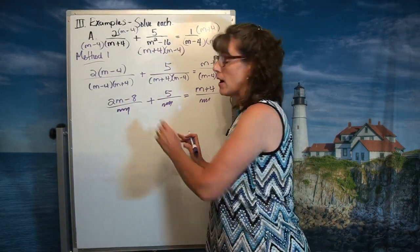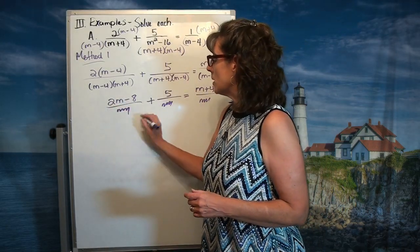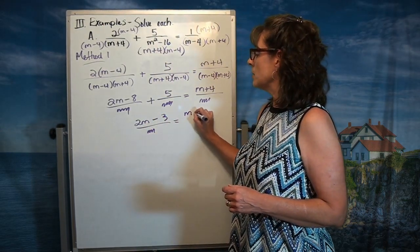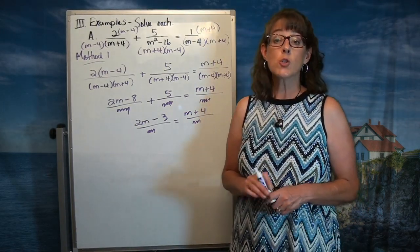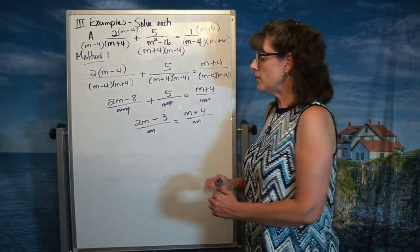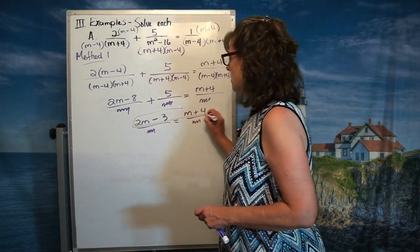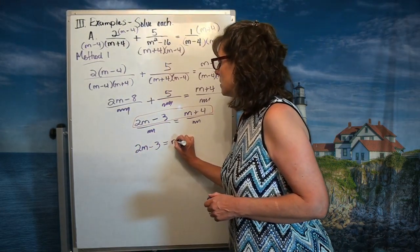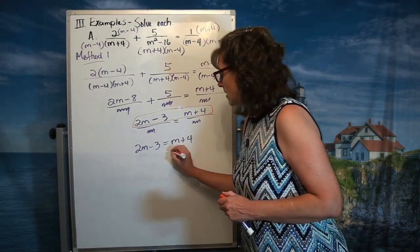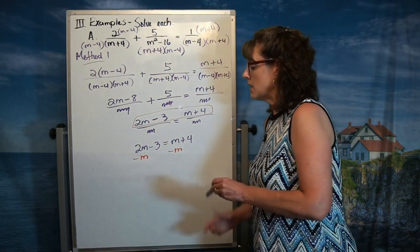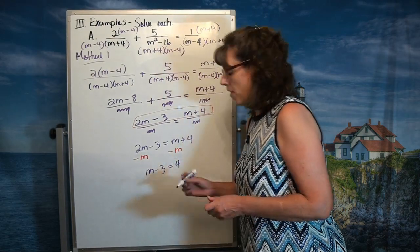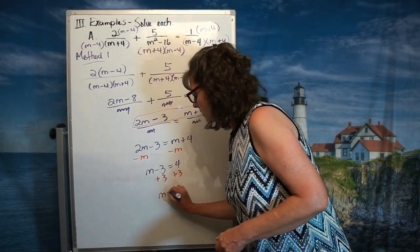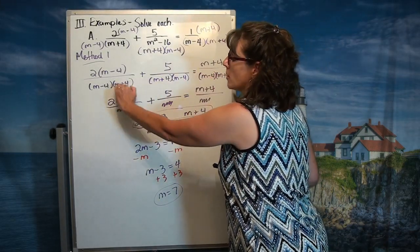I could go ahead and add these because I do have that common denominator. When I add them, 2m doesn't combine with anything, and negative 8 plus 5 gives me negative 3. So I have 2m minus 3 over common denominator equals m plus 4 over common denominator. Since the fractions are equivalent and the denominators are the same, the numerators have got to be the same. So 2m minus 3 must equal m plus 4. Now I can solve — subtract m from both sides, giving me m minus 3 equals 4. Add 3 to both sides, giving me m equals 7. You could also have dropped those denominators right here earlier if you wanted.